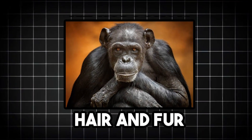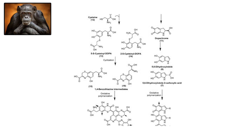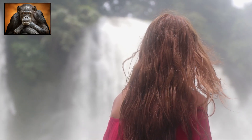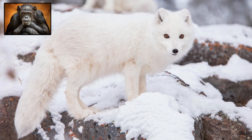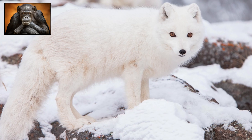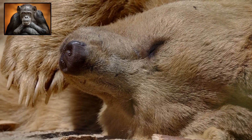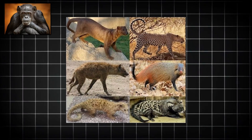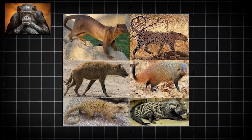Hair and fur are defining characteristics of mammals, made from a protein called keratin, which is also found in nails, hooves, and feathers. While hair might seem like a simple trait, its evolution was very important for survival, behavior, and ecological success. One of the most important functions of hair and fur is insulation. By trapping a layer of air close to the skin, fur helps regulate body temperature. This ability to stay warm in cold environments and cool in hot ones gave mammals an edge over reptiles and other cold-blooded animals.